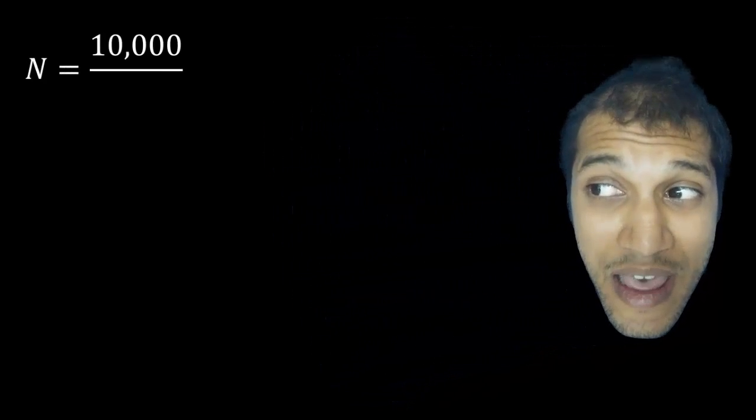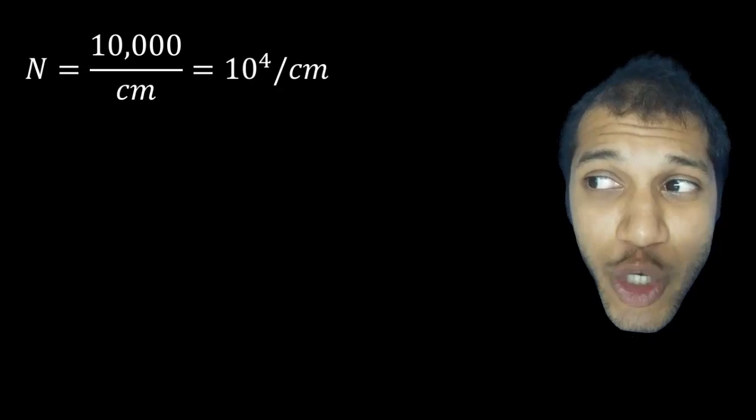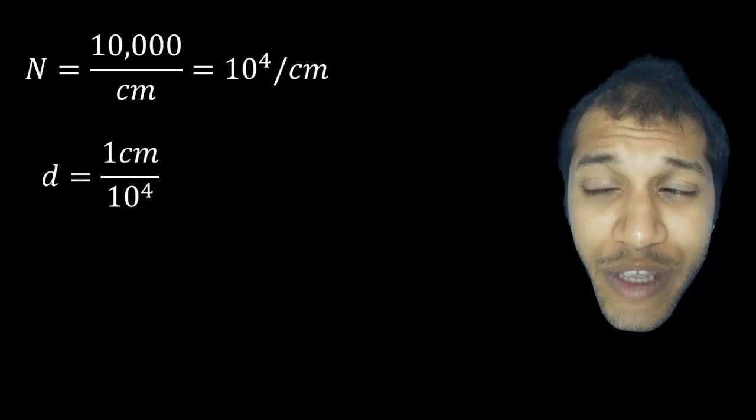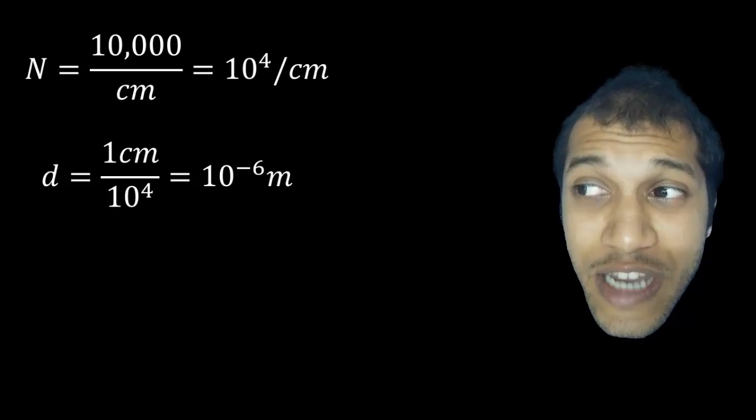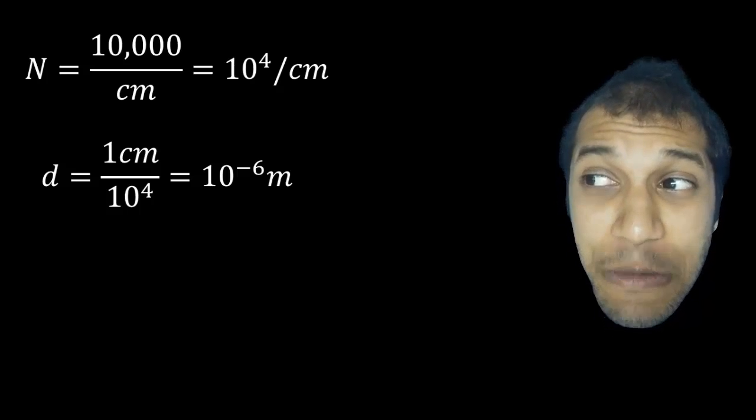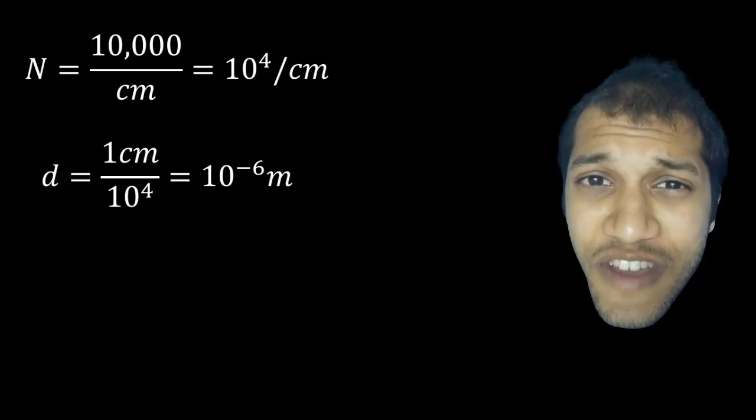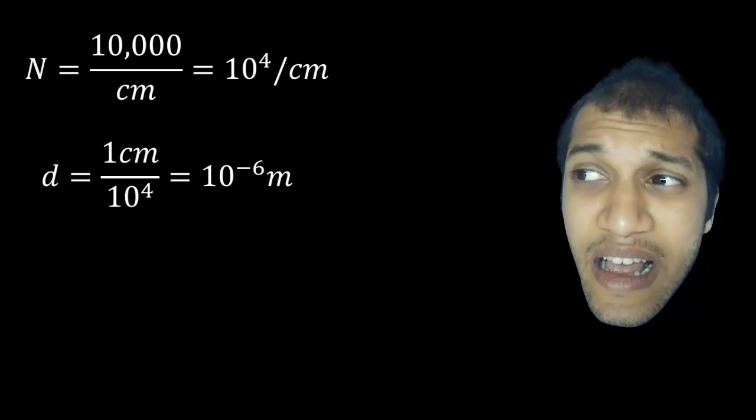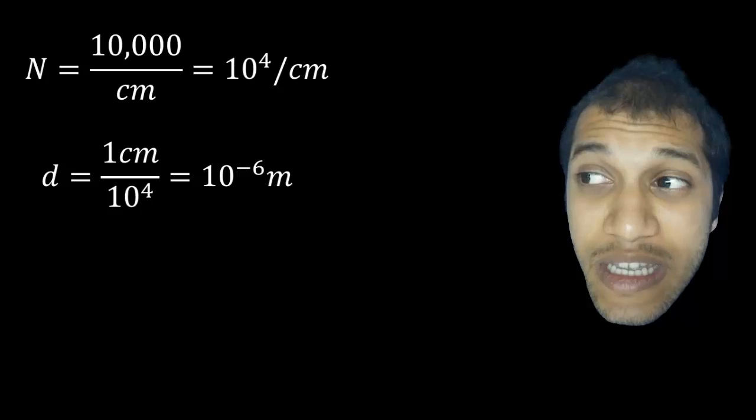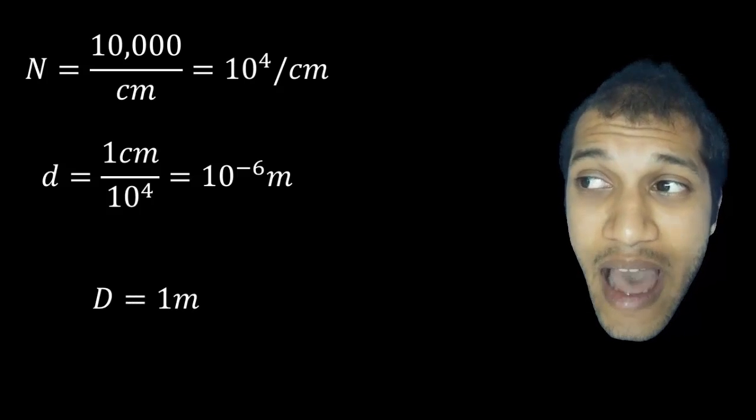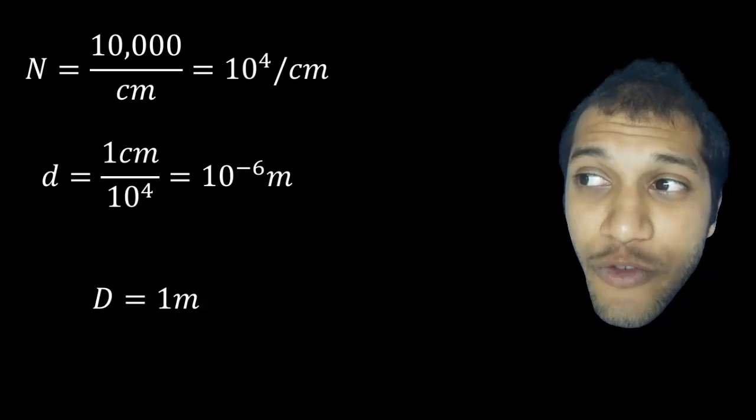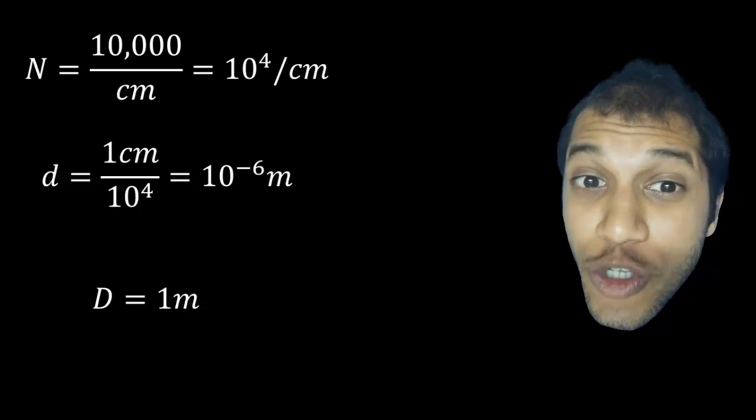Suppose my grating has about 10,000 slits per centimeter. Then the distance between any two slits is going to be roughly one divided by 10,000. That gives you about 10 to the minus six meter. That's a micrometer. That's a very small distance. Let's take the value of D to be one meter. That's good enough.